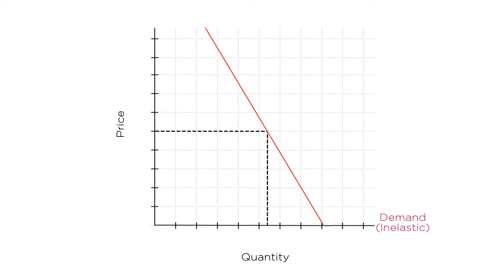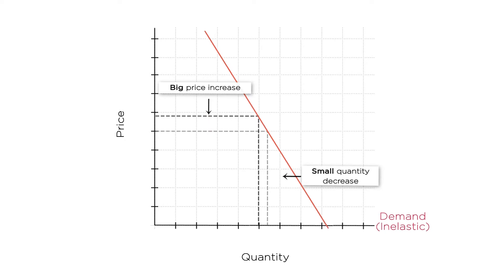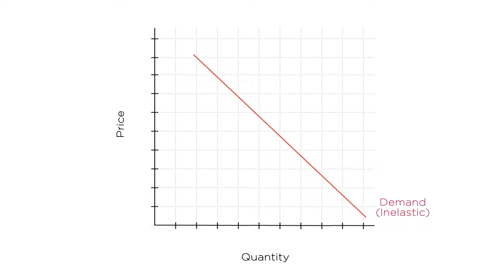In this case, the monopolist can raise the price without losing many consumers to another market. But as the demand elasticity rises, the monopolist has to act more like a competitive firm. In fact, with perfectly elastic demand, the monopolist has no market power and he's forced to set the price equal to marginal cost, just like a competitive firm.